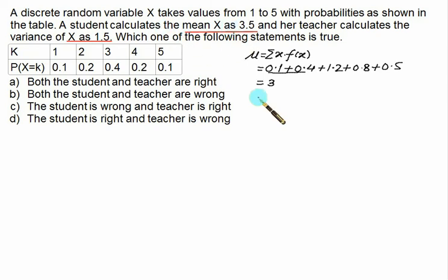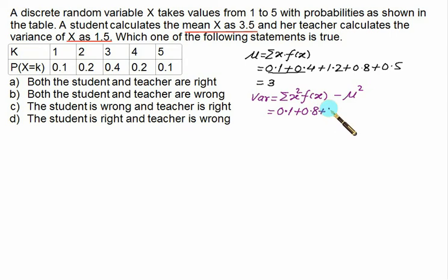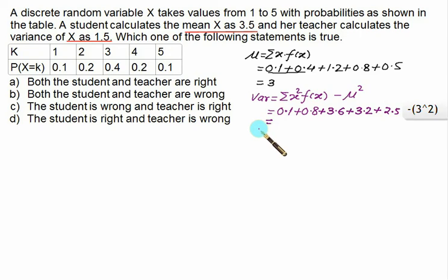Now let's check the variance. Variance is given by sigma of x squared f(x) minus mu squared. We have 1 squared into 0.1 is 0.1, 2 squared is 4 into 0.2 is 0.8, 3 squared is 9 into 0.4 is 3.6, 4 squared is 16 into 0.2 is 3.2, 5 squared is 25 into 0.1 is 2.5, minus 3 squared. The answer is 1.2, whereas the teacher gave 1.5. So the actual variance is 1.2, meaning both the student and the teacher were wrong.